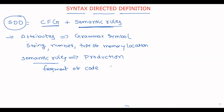Semantic rules are simply a fragment of code that is embedded at the end of a production. So a semantic rule means the code that is placed at the end of the production.